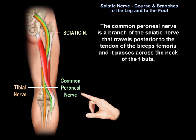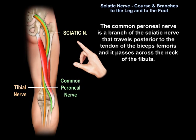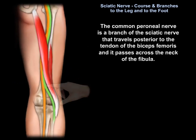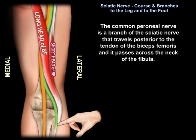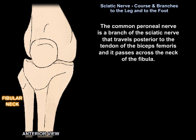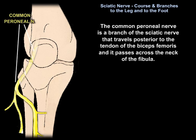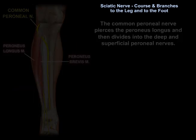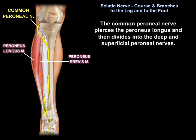The common perineal nerve is a branch of the sciatic nerve that travels posterior to the tendon of the biceps femoris, and it passes across the neck of the fibula. It pierces the perineus longus, then divides into the deep and superficial perineal nerves.